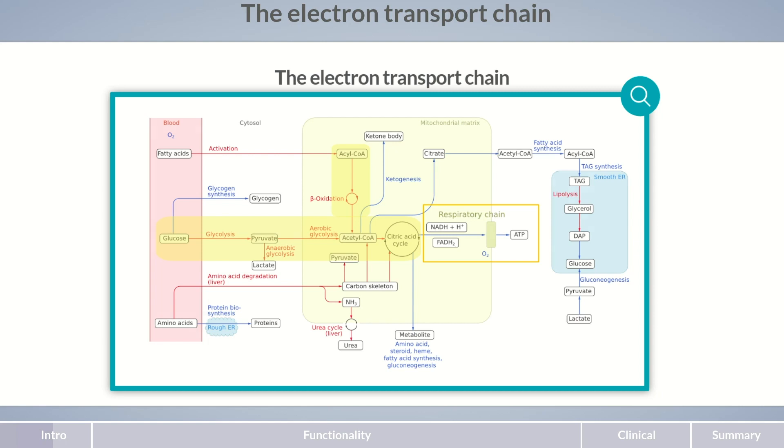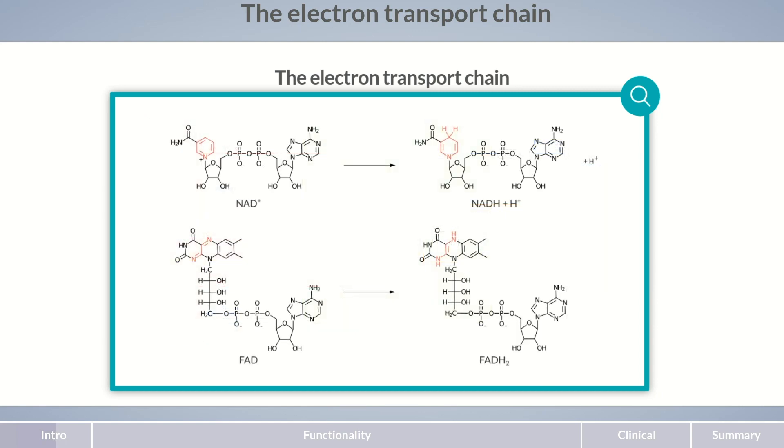Let's refresh our knowledge. The reduced forms NADH and H+, and FADH2 are built when NAD+ and FAD each pick up two electrons and two protons. While the reducing equivalents are reduced in this way, the molecules from which the electrons and protons originate are oxidized.